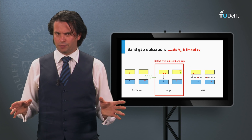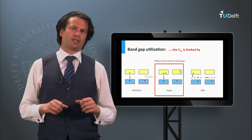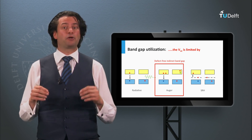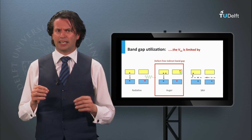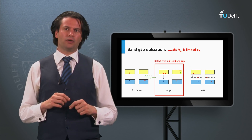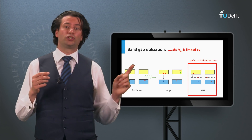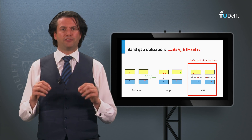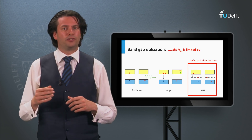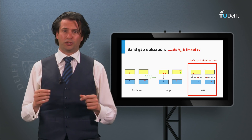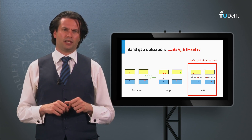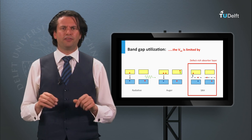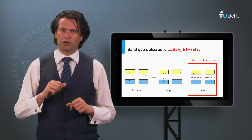Let's consider the last design rule: utilization of the band gap energy. As discussed in week 3, band gap utilization is determined by recombination losses. Since silicon is an indirect band gap material, only Auger recombination and Shockley-Read-Hall recombination determine the open-circuit voltage. For Shockley-Read-Hall, the recombination of charge carriers is related to electrons trapped at defect states. Regarding defects in the bulk of silicon, we can distinguish between two types of silicon wafers.